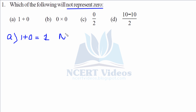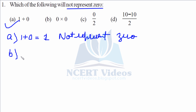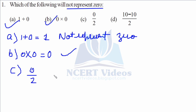Option B: zero into zero is always zero, therefore it does represent zero. Option C: zero over two — whenever zero is divided by any number it is zero. Option D: ten minus ten is zero, over two — same case as C, therefore it is zero and represents zero.